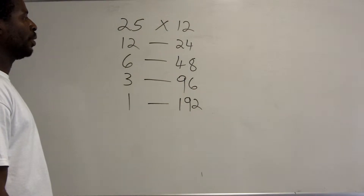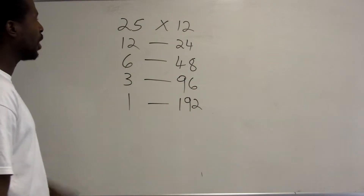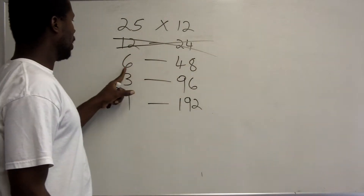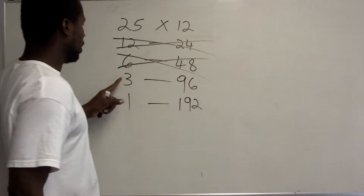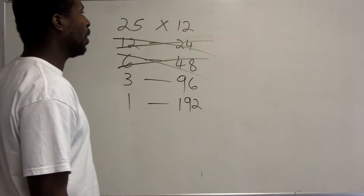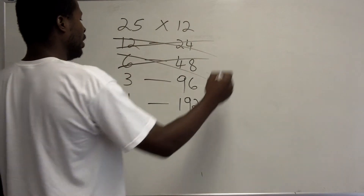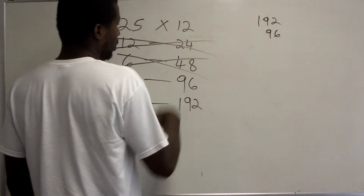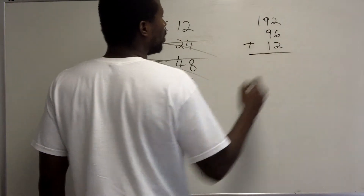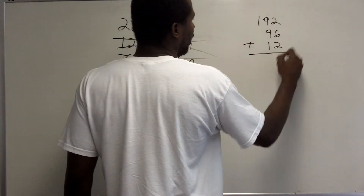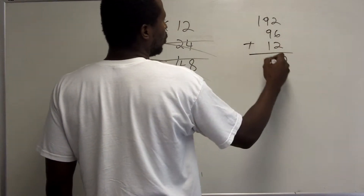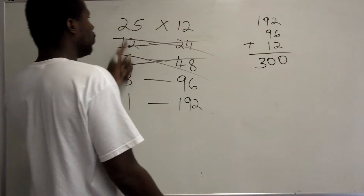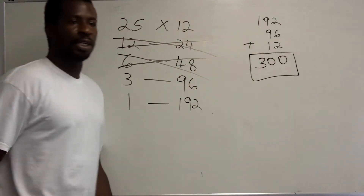Now we eliminate rows with even numbers in the first column. 25 is odd — keep it. 12 is even — eliminate. 6 is even — eliminate. 3 is odd — keep it. 1 is odd — keep it. So the product of 25 and 12 is 192 plus 96 plus 12, which equals 300. So 25 times 12 is 300.